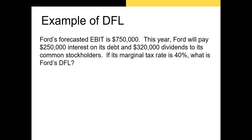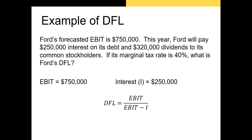Let's take a look at an example. Ford's forecasted EBIT is $750,000. This year Ford will pay $250,000 in interest on its debt and $320,000 in dividends to its common shareholders. If its marginal tax rate is 40%, what is Ford's DFL? Note that we won't need all of this information. We know our EBIT of $750,000 and our interest expense of $250,000. Using the formula EBIT divided by (EBIT minus interest), we get $750,000 divided by $500,000, which equals 1.5. This tells us that a 1% change in EBIT would result in a 1.5% change in earnings per share.